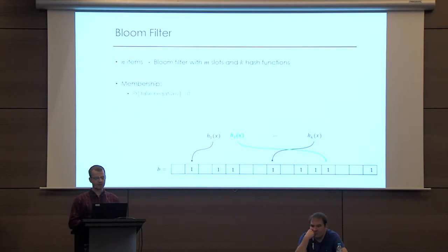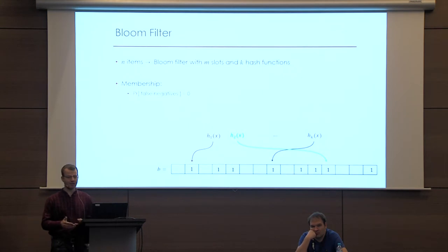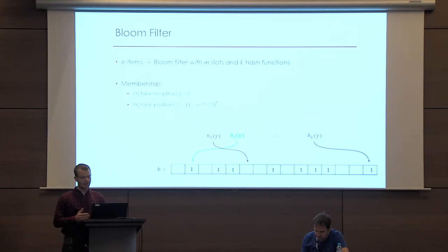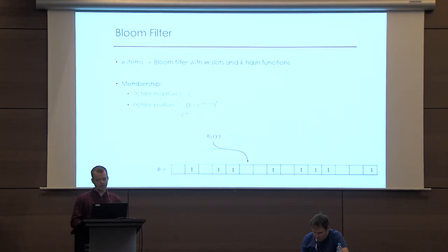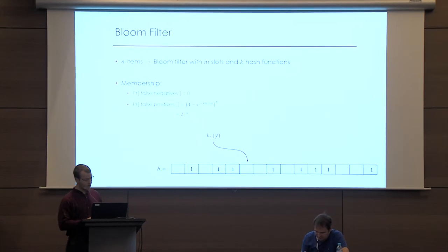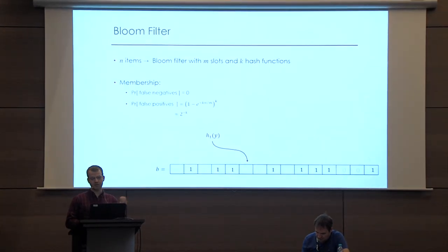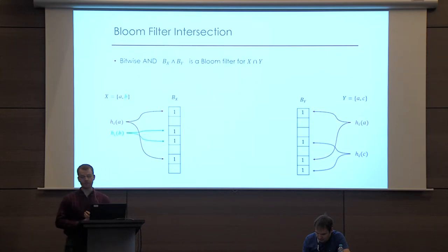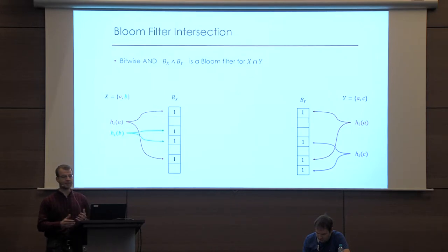When you insert n items into a Bloom filter with m slots, there are no false negatives — if an item is in it, we always say yes. But there is a probabilistic property where for an item that hasn't been inserted, we may falsely report it as being inserted. This bad case can be bounded to be negligible in your security parameter. Intuitively, at least one of the hash functions will likely hit one of the zeros. Another cool property of Bloom filters is that the bitwise AND of two Bloom filters is itself a valid Bloom filter for the intersection of the two sets.